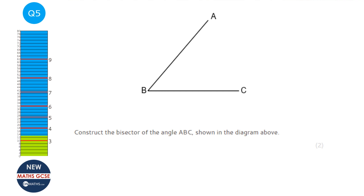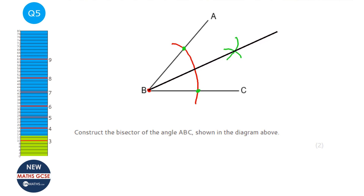For constructing an angle bisector, put the compass point on the vertex and draw an arc. Then put the compass point where your arc and line BA cross and draw an arc across. Do the same using the same compass width on line BC. Then join the vertex up with where those arcs intersect. Don't rub any of those arcs out — all of those arcs give you marks.